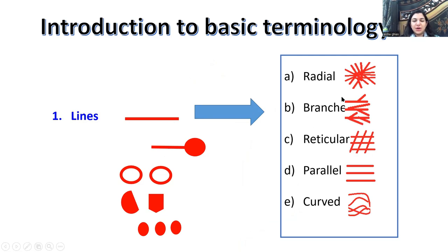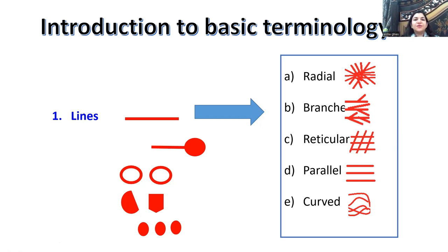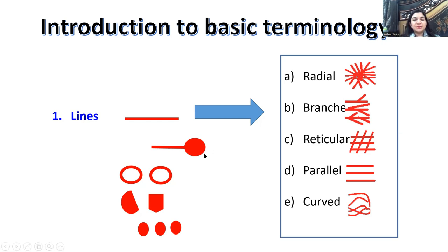Lines are present in various combinations or architectures. There are five possible combinations of lines in dermoscopy: radial, branched, reticular (forming a network), parallel, and curved. I made this diagram myself to understand the basics, as it was not written this way in any dermoscopy book or article. Radial, branched, reticular, parallel, and curved — the five possible line configurations.